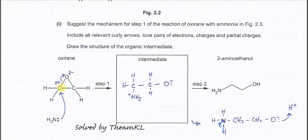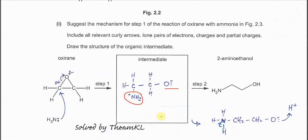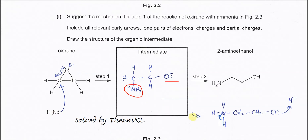First, label the partial charges: the carbon is partial positive (δ+) and the oxygen is partial negative (δ−). Draw an arrow from the lone pair of ammonia's nitrogen pointing to the partial positive carbon, and an arrow from the C–O bond to oxygen showing bond breaking. The oxygen gains the electron pair and forms an oxide, while nitrogen forms a new bond to the carbon.